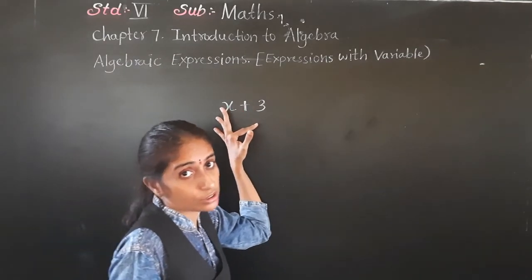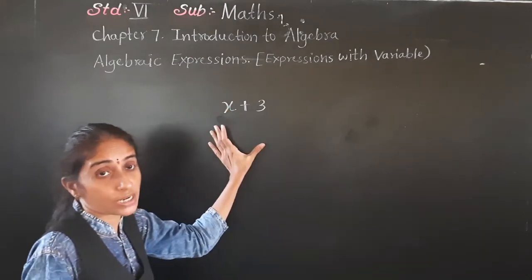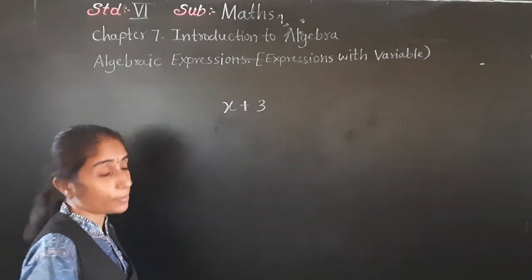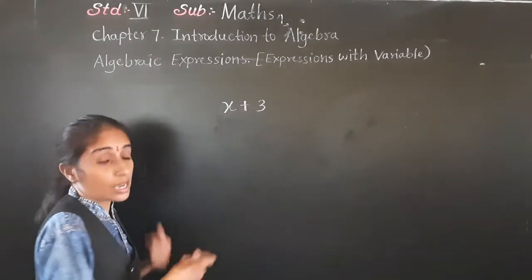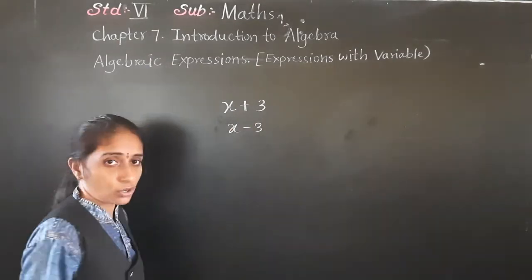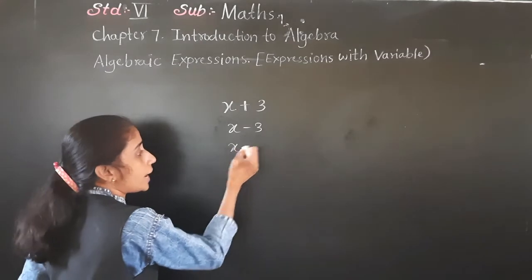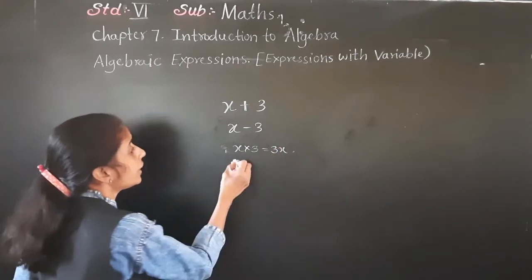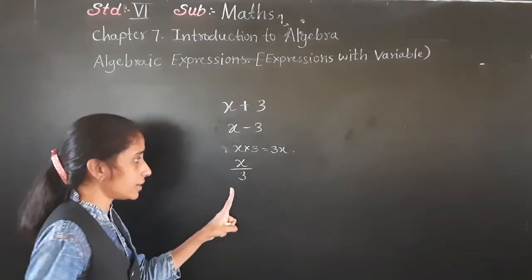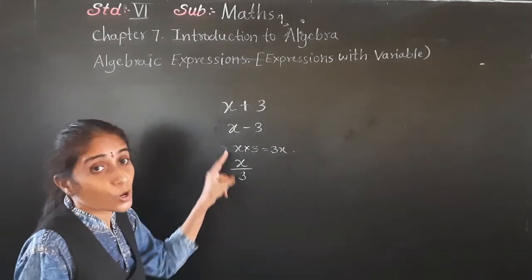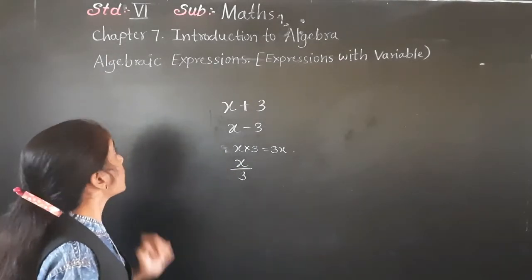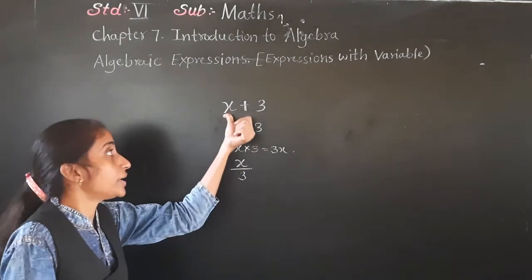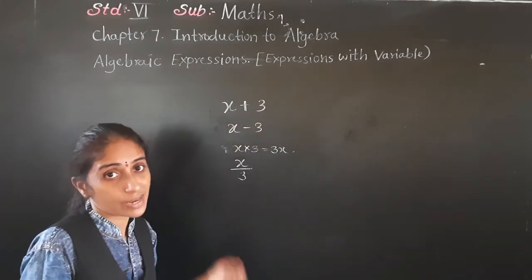An algebraic expression is an expression which has a variable and constant with the four basic operations — addition, subtraction, multiplication, and division. It is a combination of variable and constant with four basic operations. For example: x plus 3, x minus 3, x multiplied by 3 (meaning 3x), and x upon 3 (x divided by 3). So these are algebraic expressions.